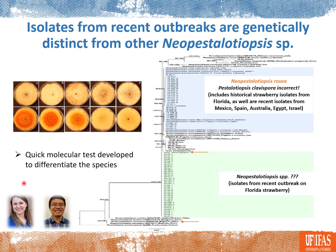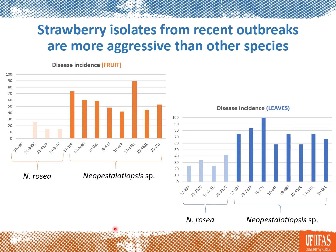Based on these genetic differences, we have developed a quick molecular test that we've been using in our diagnostic clinic, so when we receive samples we can tell whether it's the new and more aggressive species or the Neopestalotiopsis rosae, which is not as aggressive. We have also confirmed with pathogenicity tests that those isolates from the recent outbreaks are more aggressive than the other species that we had before.